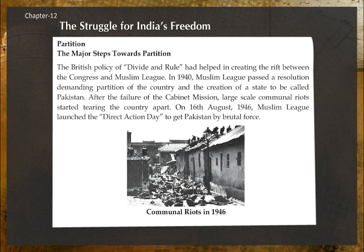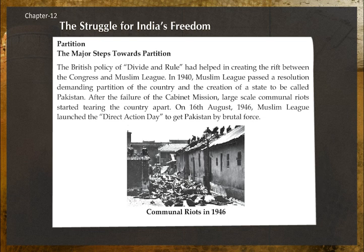Major steps towards partition: The British policy of divide and rule helped create the rift between Congress and the Muslim League. In 1940, the Muslim League passed a resolution demanding the partition of the country and the creation of a state called Pakistan. After the failure of the Cabinet Mission, large-scale communal riots began tearing the country apart. On 16 August 1946, the Muslim League launched the Direct Action Day to get Pakistan by brutal force.